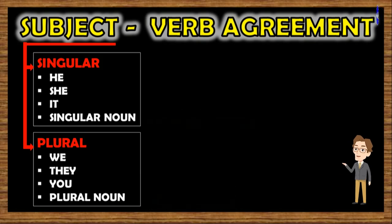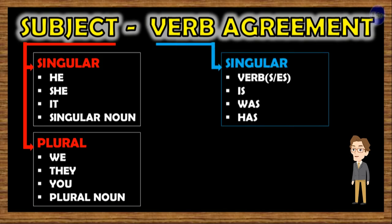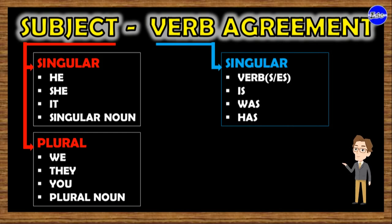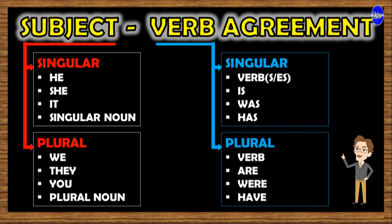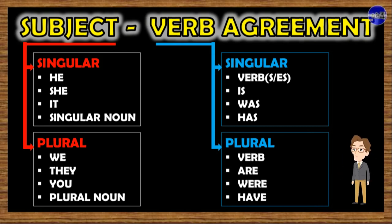In English, verbs are also divided into two forms. They are singular and plural form. Verbs in singular forms are such as verb with -s or -es, to be 'is' for simple present, and 'was' for simple past, and also auxiliary 'has' for present perfect, while for the plural verbs are such as verb without -s or -es, to be 'are' for simple present, and 'were' for simple past, and auxiliary 'have' for present perfect.